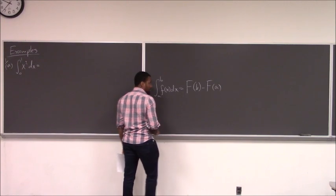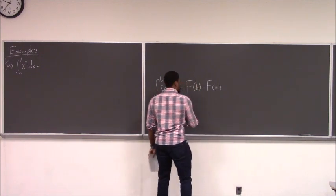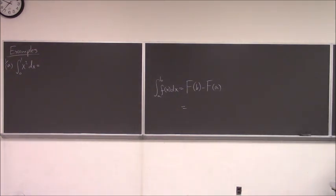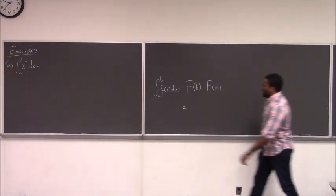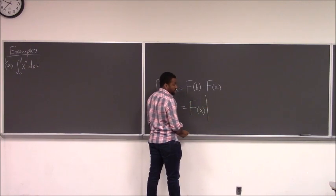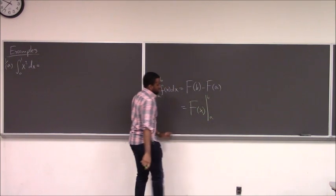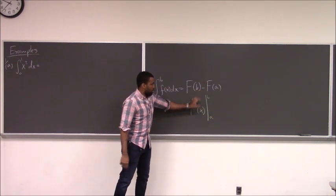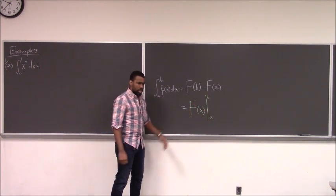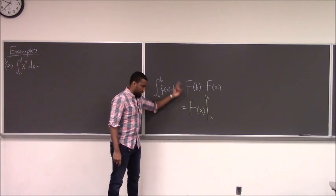Sometimes this is written with a notation: you write big F of x, then a straight line, with B on top and A on the bottom. That's just notation for taking the top number, plugging it in, minus taking the bottom number and plugging it in. That's a very standard notation — it means exactly the same thing as big F of B minus big F of A.